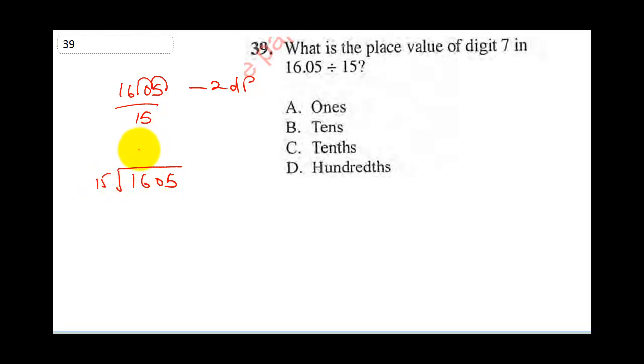15 into 16 is going to give us 1. 15 times 1 is 15, so this will give us 10. 15 is not going into 10, so we add 0 here. Bring down your 5. 15 into 105 is going to give us 7. 15 times 7 is 105, so this will give us 0. Now remember, you bring back your 2 decimal places. This will be 1 and 2. So when you do that division, you're going to get 1.07.